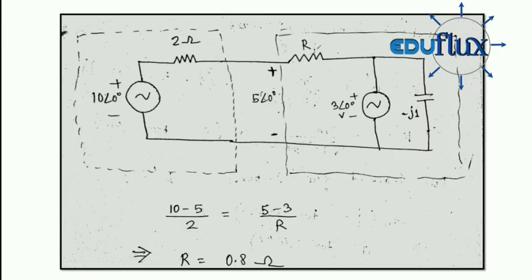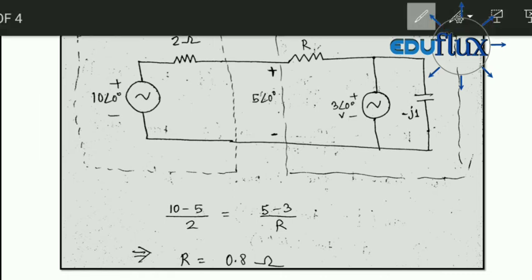This was circuit A and this is circuit B. Circuit A is acting as the source and circuit B is acting as the load. Now just see here. This is 10 angle 0 degree, and this is circuit A and this circuit B.